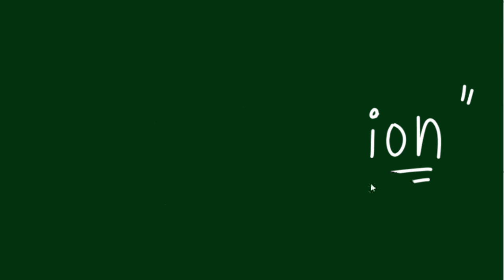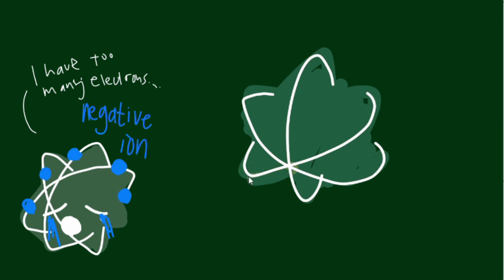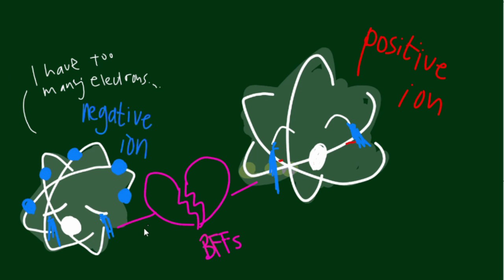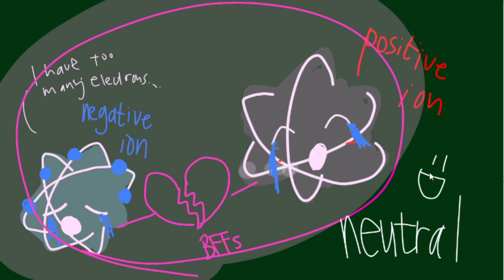An important thing to note here is that atoms prefer not to be ions. That is, when they gain or lose an electron, they try their best to become neutral again by moving electrons or finding oppositely charged ions that also want to be neutral.